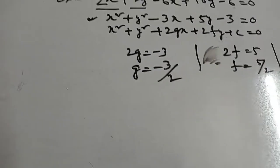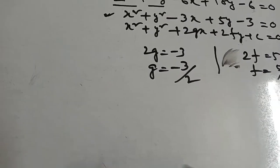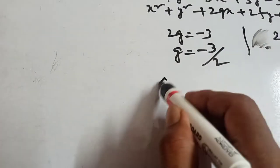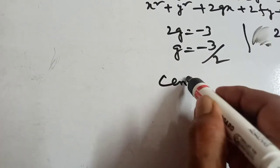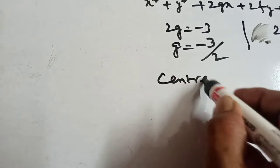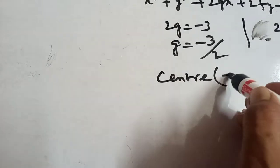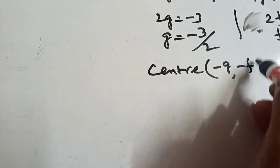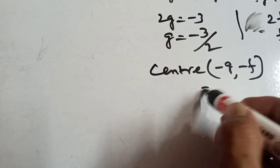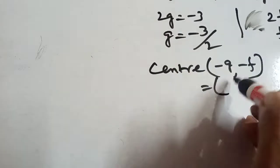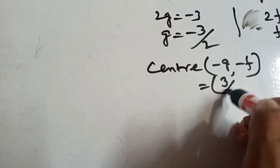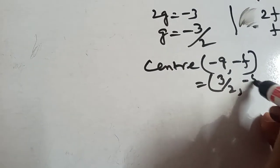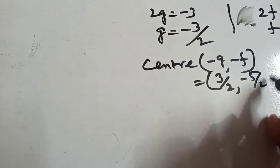Now, center = (−g, −f), that means center = (3/2, −5/2).